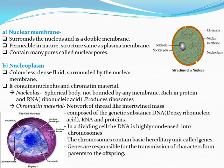The nucleoplasm contains the nucleolus and chromatin material. The nucleolus is a solid ball — not bounded by any membrane. It is rich in protein and a chemical known as RNA — Ribonucleic acid.